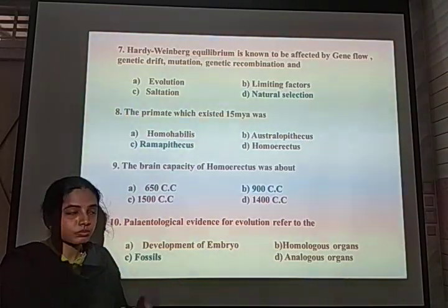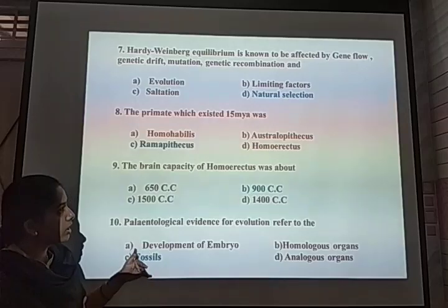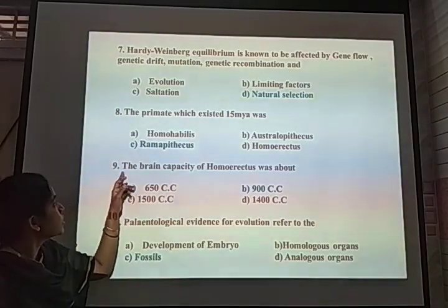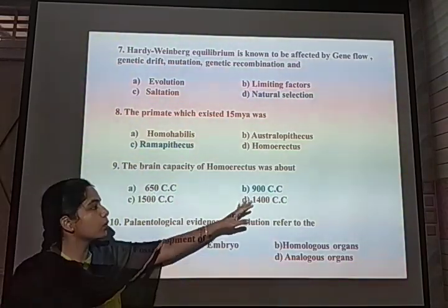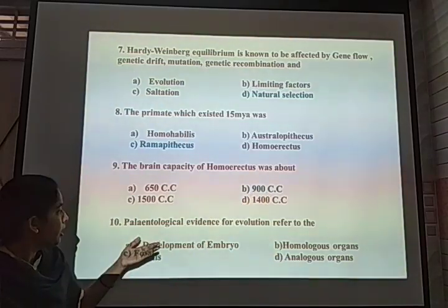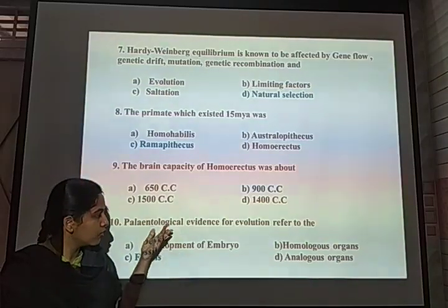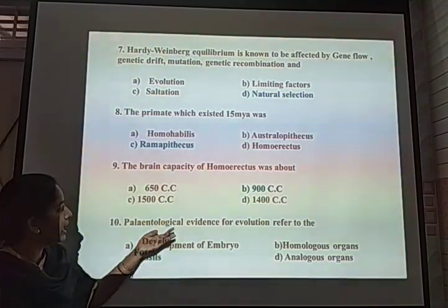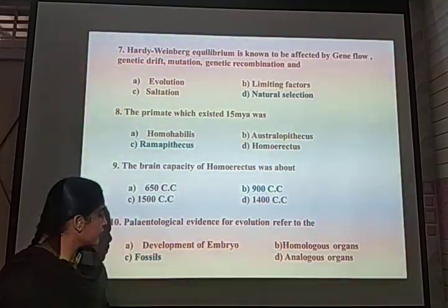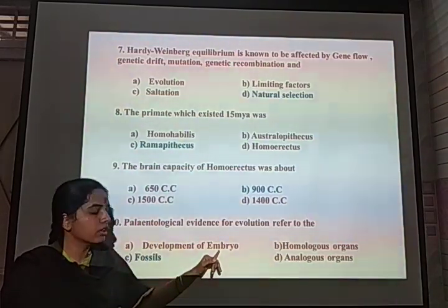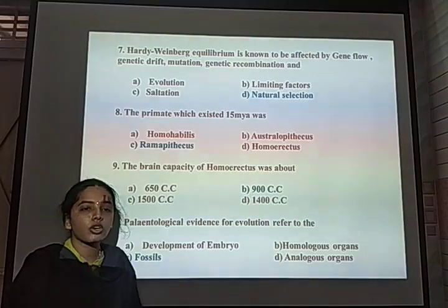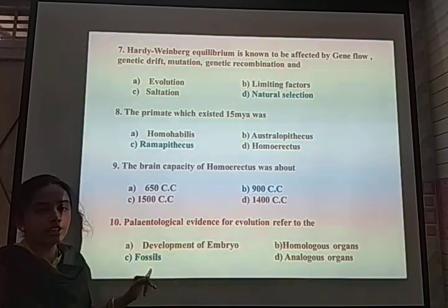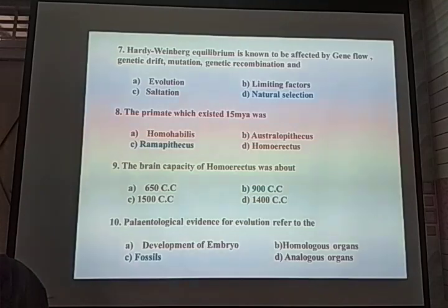Next MCQ: What is the brain capacity of Homo erectus? Based on brain capacity, human individuals are classified as Homo habilis, Homo erectus, Neanderthal man, and Homo sapiens. The brain capacity of Homo erectus was nearly about 900 cc. Next MCQ: Paleontology evidence for evolution of life refers to the study of fossils, which are remains of plants and animals found in sedimentary rocks. By paleontological evidence, evolution is described through fossils.